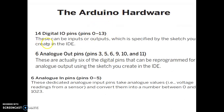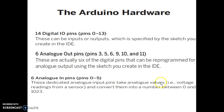To recap the Arduino hardware: there are 14 digital I/O pins numbered 0 to 13, which can be either input or output as specified in your program. Out of these 14, pins 3, 5, 6, 9, 10, and 11 can be used as analog output pins. There are also 6 analog input pins numbered 0 to 5, which convert incoming analog voltage to a digital number between 0 and 1023.